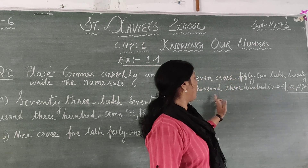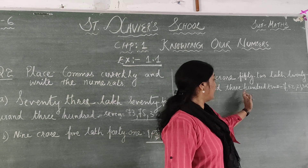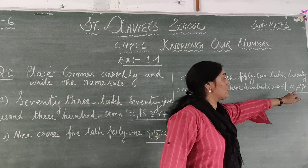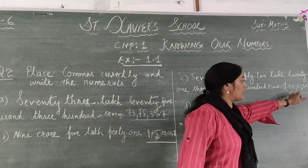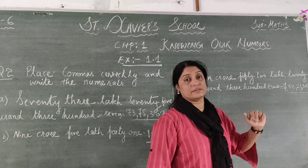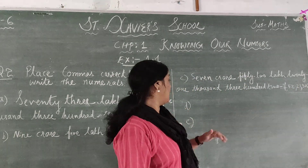Then 21 — that is 21,000 — then 300. This is the way you have to insert the commas for Part C: 7,52,21,302.